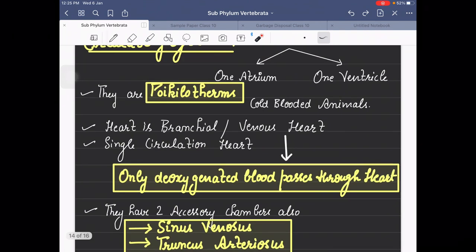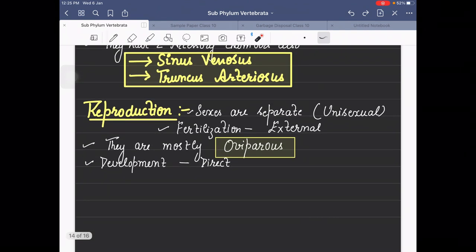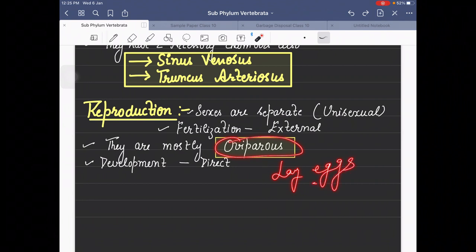For reproduction, sexes are separate; they are unisexual. Fertilization is external. They are mostly oviparous, meaning they lay eggs. Development is direct with no larval stage observed.